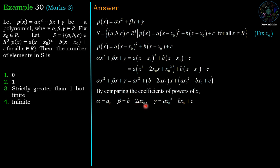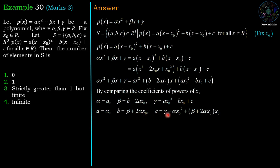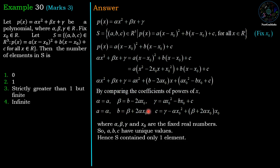The coefficient of x squared gives alpha equal to a. Similarly, beta equals b minus 2a·x0, and gamma equals a·x0 squared minus b·x0 plus c. We have three unknowns a, b, c and we can solve them using these three equations. So a equals alpha, b equals beta plus 2·alpha·x0, and c equals gamma minus (alpha·x0 plus beta plus 2·alpha·x0) times x0. Since x0, alpha, beta, and gamma are all fixed numbers, a, b, c will have unique values, and therefore S contains only one element — which is option number 2.